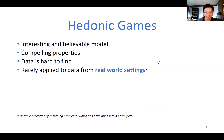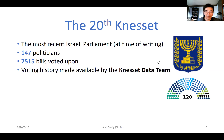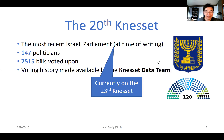Hedonic games are an interesting and believable model, but data for this kind of game is really hard to find, and in practice they're rarely applied in real-world settings, with the notable exception of matching problems. That's where this paper comes in. We have data from the Israeli Knesset — specifically the 20th Knesset — with voting patterns for 147 politicians and over 7,000 bills over the course of their term.